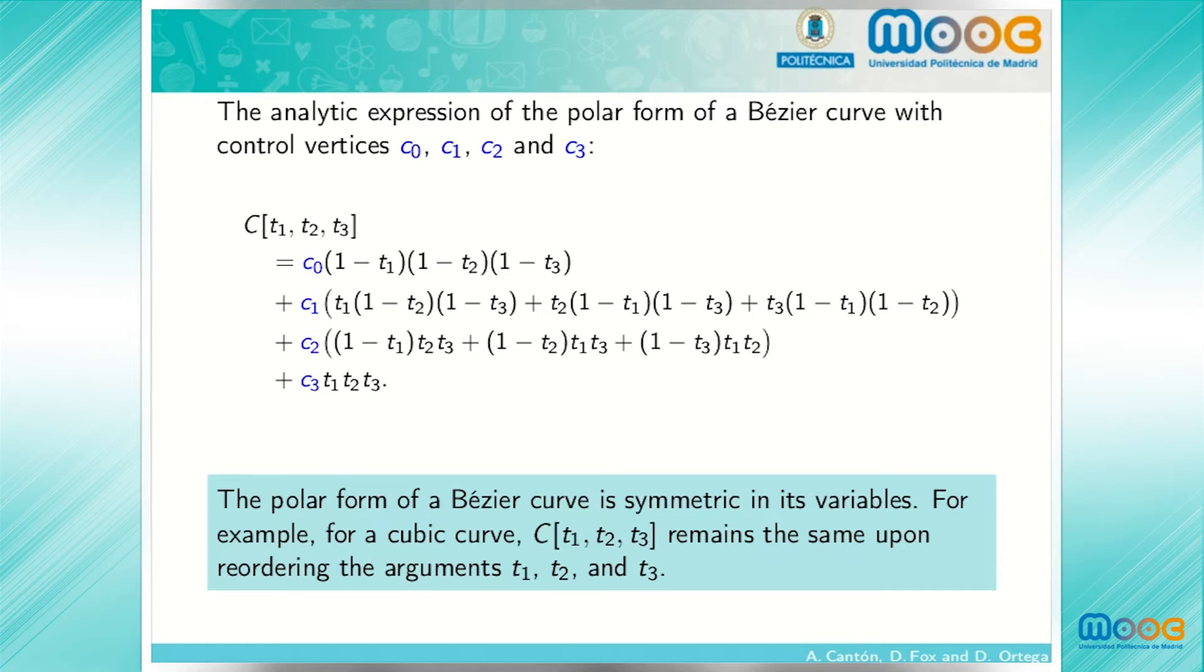That means if we permute these arguments, the value of the function does not change. Consequently, setting these arguments equal to, for example, 0, 1, 1, 1, 1, 0, 1, or 1, 1, 0 will give the same value.